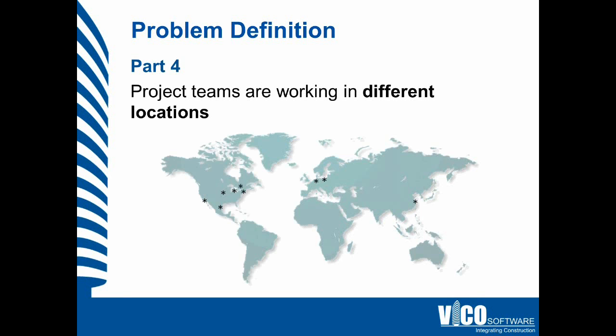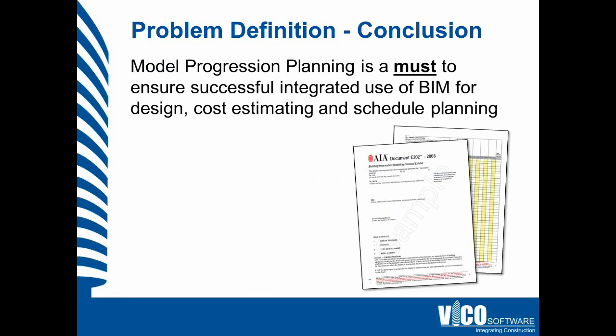What many people experience on a daily basis is that project teams work in different locations — it is very rare that everyone sits in the same office. Working in different locations requires communication, and communication is made easier by implementing standardization. The conclusion is that model progression planning is really a must if you want to achieve successful implementation and use of building information models with associated estimates and schedules. The AIA has recognized that need and converted it into a document that can be attached to a contract.